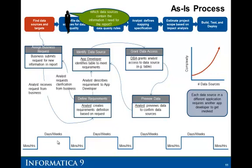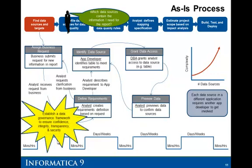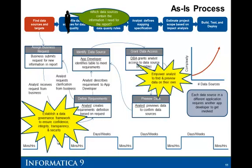Also, consider that as you add even more data sources to the mix, the complexity can go up exponentially. That is because if this is a data source coming from another application, you may need to get another application developer involved or a subject matter expert. Others reasons include join conditions that need to be determined and data quality issues that need to be resolved. So, how can we improve this? First, establish a good data governance framework that's going to ensure confidence, integrity, transparency, and security. Second, provide the analyst a tool where they can find and preview the data on their own without necessarily having to get a developer or a DBA involved.